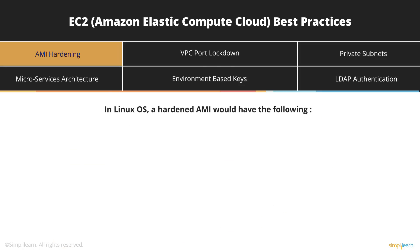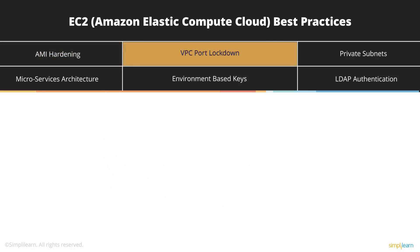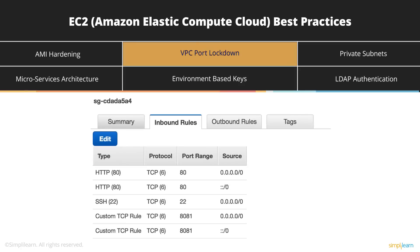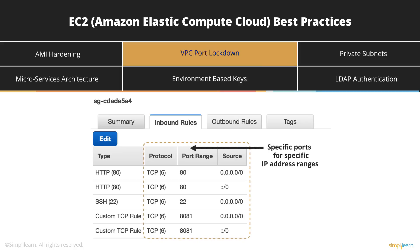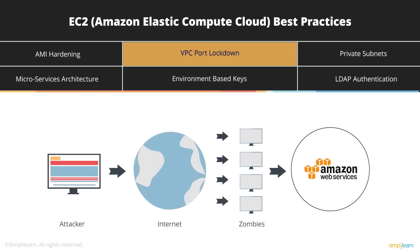For a Linux OS, a hardened AMI would have the SSH port changed, SSH password-based logins disabled, and Security-Enhanced Linux set to enabled if it's CentOS. If it's Ubuntu, you can enable the firewall and only allow port 22. The next thing is VPC port lockdown — apart from the instance-level firewall, you should also lock down ports specifically to IP addresses, ensuring that security groups have only the specific ports required by that server or application open to specific IP addresses. If you must open something to the entire world, make sure you have adequate checks inside your application to prevent DDoS attacks.